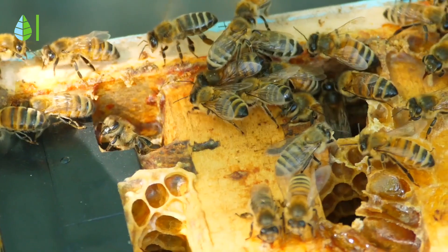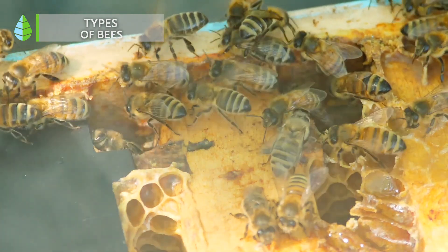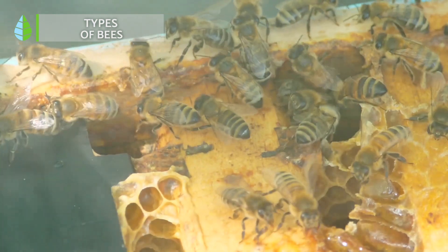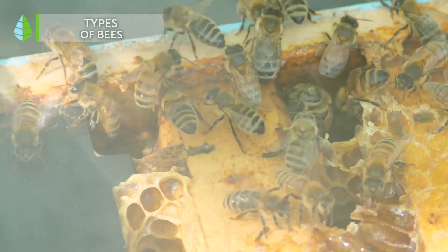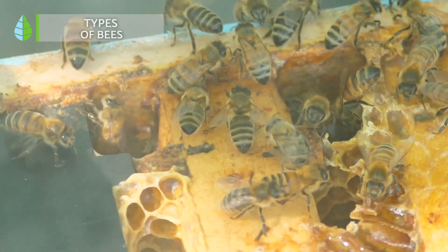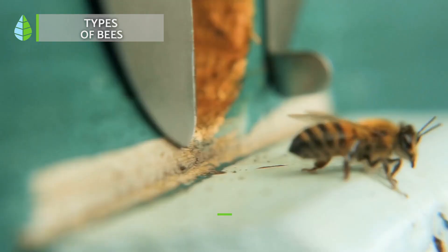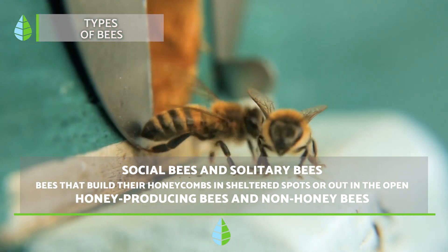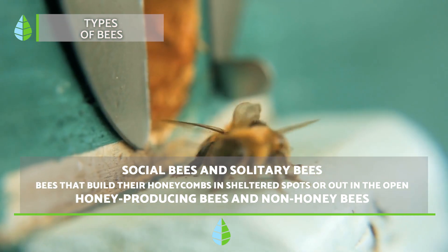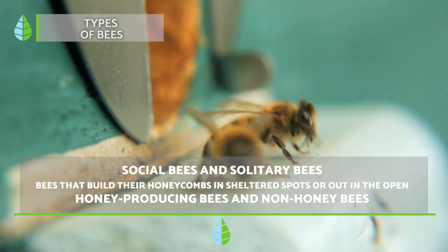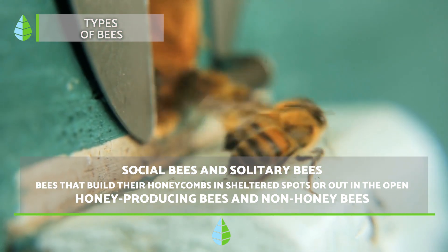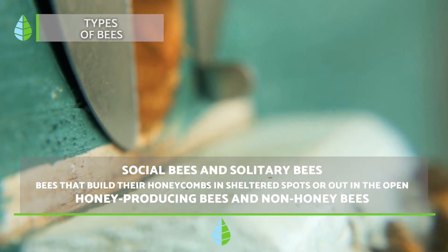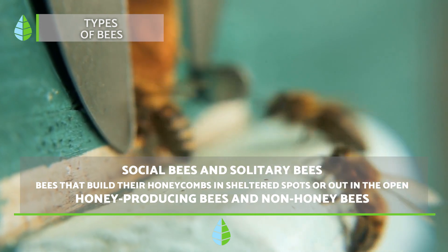Types of bees. Bees can be grouped in different ways. There are social bees and solitary bees, bees that build their honeycombs in holes and others that do so in the open air, and also honeybees and non-honeybees.